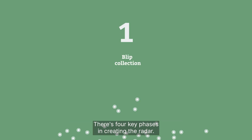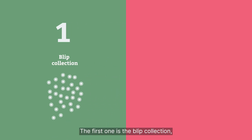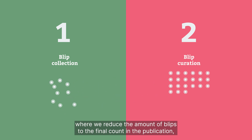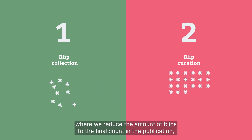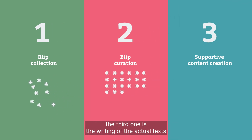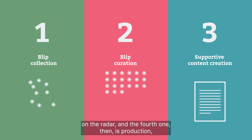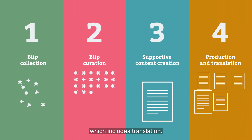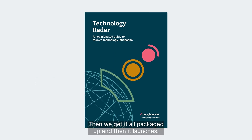There are four key phases in creating the radar. The first is blip collection. The second is the curation of the radar, where we reduce the blips to the final count for publication. The third is the writing of the actual texts on the radar. And the fourth is production, which includes translation. Then we get it all packaged up and it launches. We have a radar.